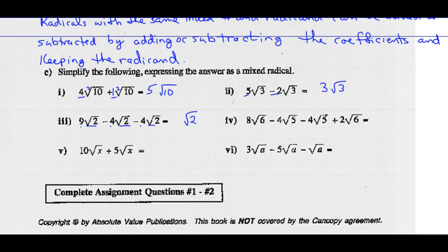Example 4: we've got like radicals of radical 5 and like radicals of radical 6. Let's do the radical 6 first: 8 radical 6 plus 2 radical 6 — 8 plus 2 is 10 radical 6. And we've got minus 4 root 5 minus 4 root 5, so negative 4 minus 4 is minus 8, and you keep that radical 5. Example 5: we've got radical x and radical x, so we keep the radical x and add the coefficients: 10 plus 5 — that's 15 radical x.